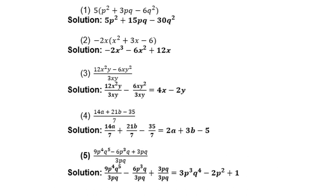Practice solutions: Number 1 — 5 times p squared is 5p squared; 5 times 3pq is 15pq; 5 times negative 6q squared is negative 30q squared. Number 2 — negative 2x times x squared is negative 2x cubed; negative 2x times 3x is negative 6x squared; negative 2x times negative 6 is positive 12x. Number 3 — divide 3xy into both terms individually, cancel like terms: answer is 4x minus 2y. Number 4 — divide 7 into all three terms: 2a plus 3b minus 5. Number 5 — divide 3pq into all three terms, cancel like terms: 3p cubed q to the power 4 minus 2p squared plus 1.